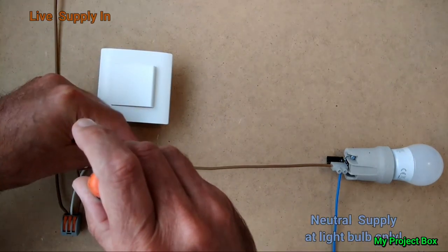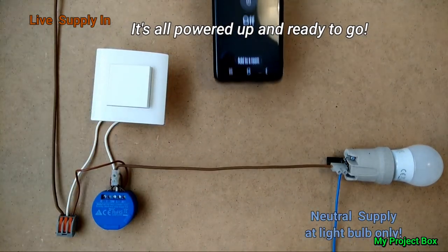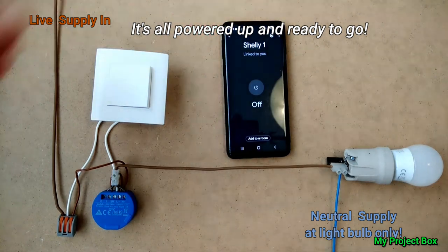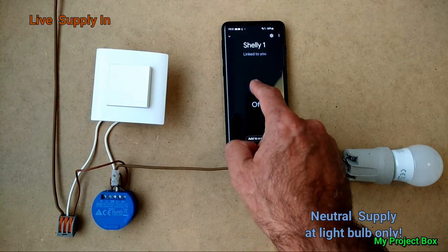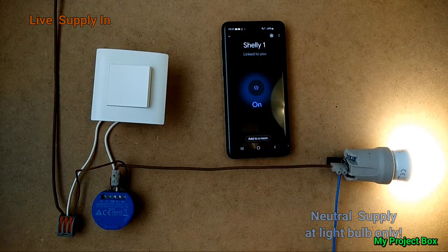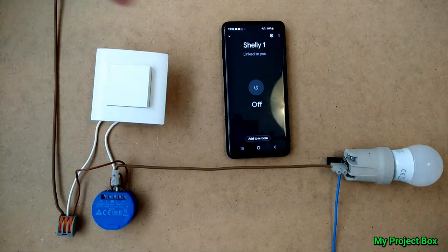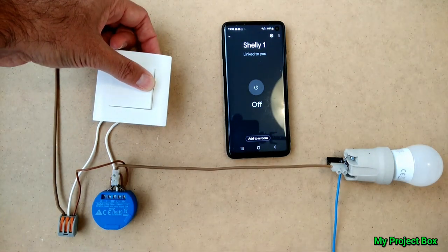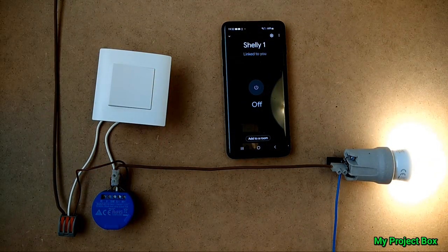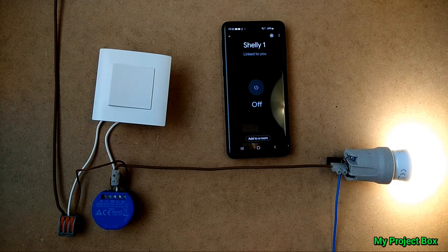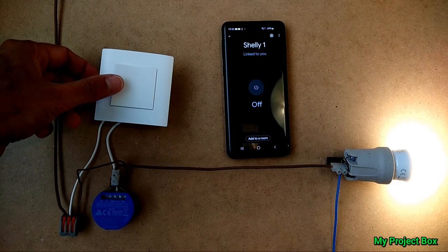And there we go. That's it. Pretty much connected all together. So let's give it a test with the Wi-Fi control. It works fine. Let's try the light switch. That works as well. Hooray. Test circuit works perfectly.